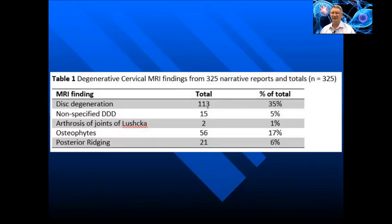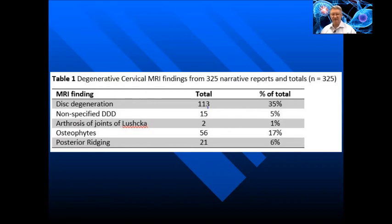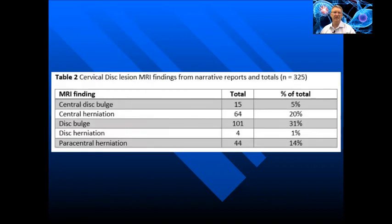So just how prevalent are these things? In 325 reports of subjects that were referred for advanced imaging by doctors of chiropractic, we found that 35% exhibited evidence of disc degeneration, 5% nonspecific degenerative disc disease. Arthrosis of the joints of Luschka was noted in 1%, osteophytes in 17%, and posterior ridging in 6%. Cervical disc lesions were also highly prevalent, with central disc bulges seen in 5% of the total, 20% had central herniations, and generalized bulging was seen in 31%.